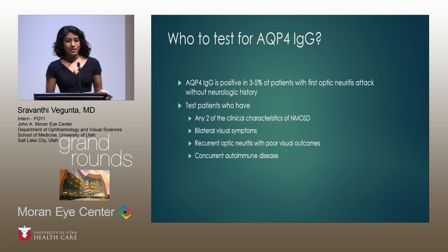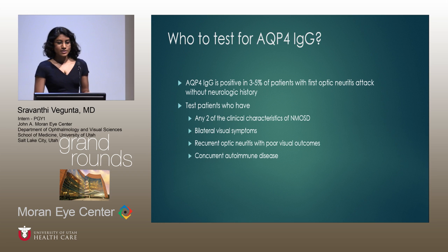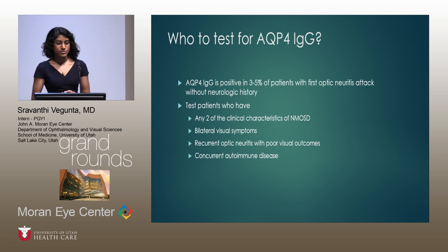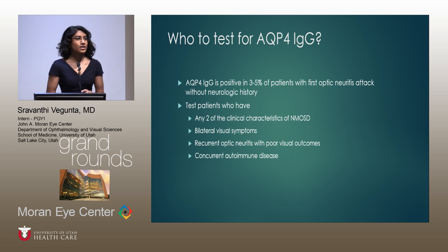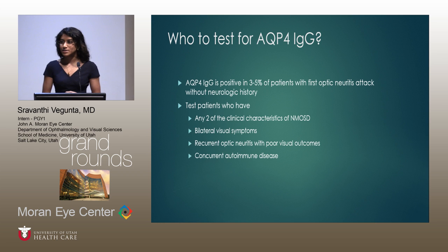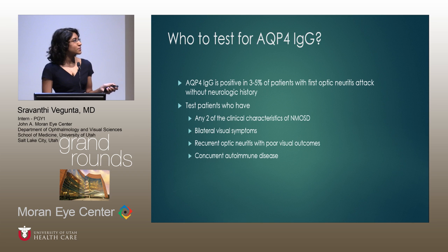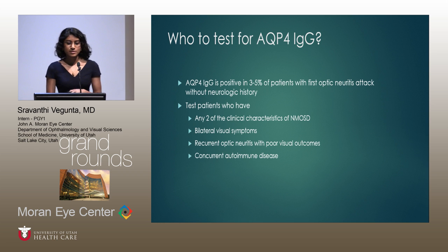Now, who should we test for the aquaporin-4 IgG antibody? Patients who've had just one episode of optic neuritis with no other neurologic history have only a three to five percent positivity rate, so it's pretty rare. However, we should consider testing patients who have any two clinical characteristics — for example, optic neuritis plus an acute brain stem syndrome, bilateral visual symptoms, recurrent optic neuritis with poor visual outcomes, or concurrent autoimmune diseases.